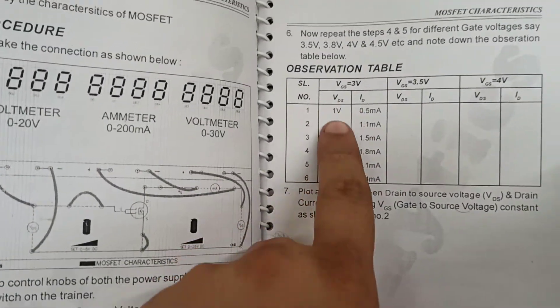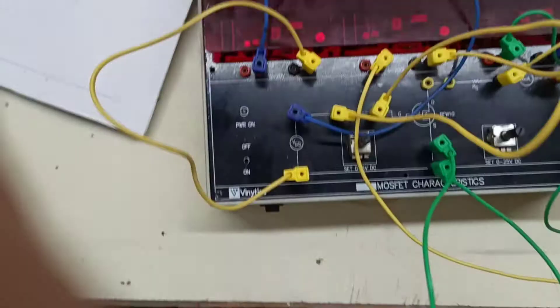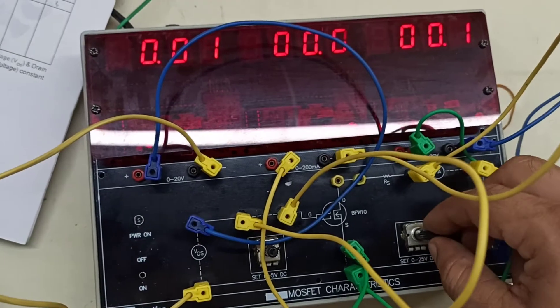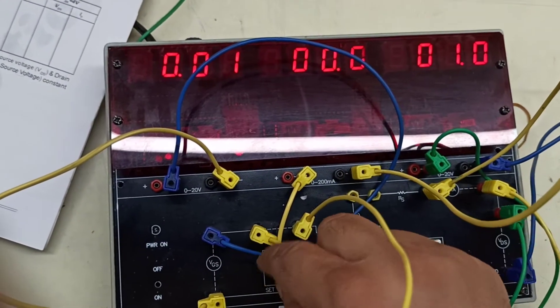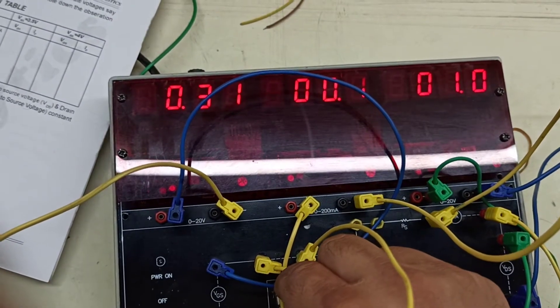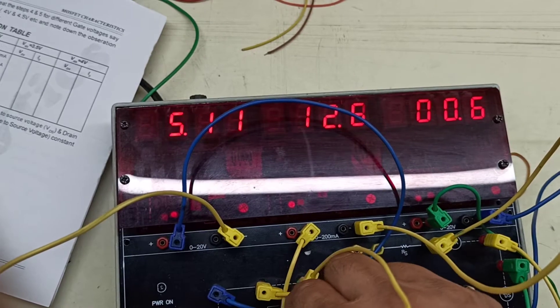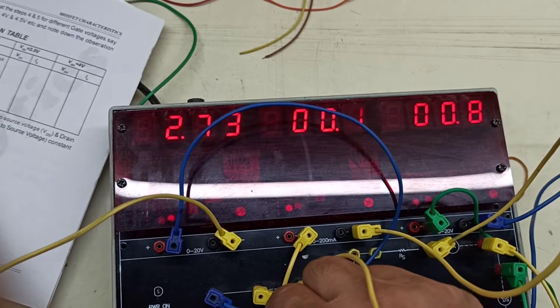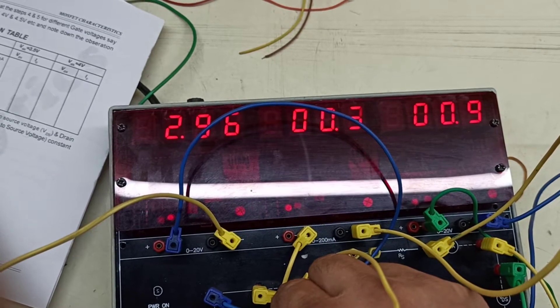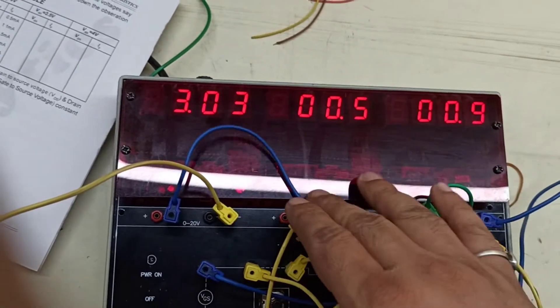Now let's see according to the chart if our VDS is 1. VDS is this one. We will set it to around 1V, and then as we adjust the voltage beyond 5V, at 3V we are getting 0.45.